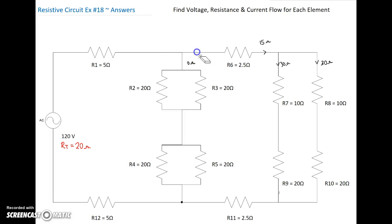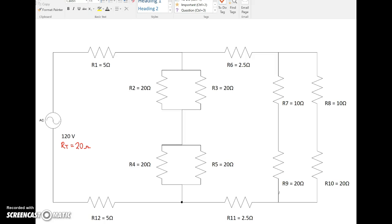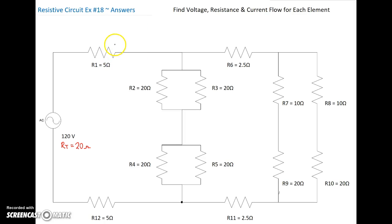At that point we can now find our current. All we have is Ohm's Law — 120 volts divided by 20 ohms gives us 6 amps flowing in this circuit. So we've got 6 amps going through there and 6 amps on the other side. If we've got 6 amps going out, we need 6 amps coming back — otherwise we've got a ground fault. This is our line, this is our neutral. Current goes out through the circuit and back. On either side we're going to have 6 amps.